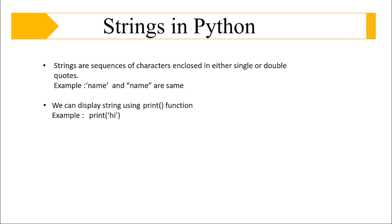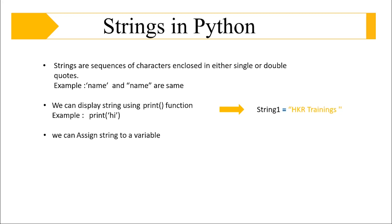We can display a string using the print function — inside either single or double quotation marks, we mention our string. It can be a sequence of characters, a sequence of digits, or a combination of both. For example, string one here is 'HKR trainings' — if I want to print this, I write print with 'HKR trainings' inside quotation. We can also assign a string to a variable; here the variable name is string one.